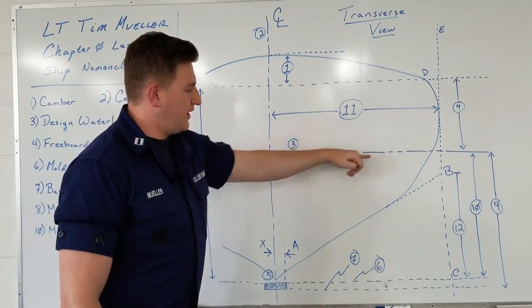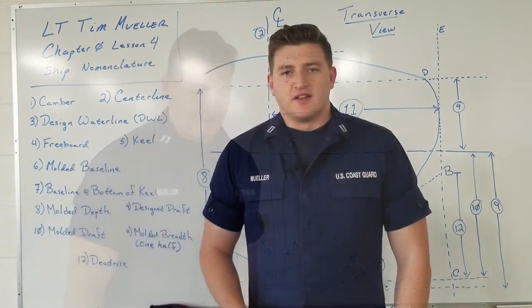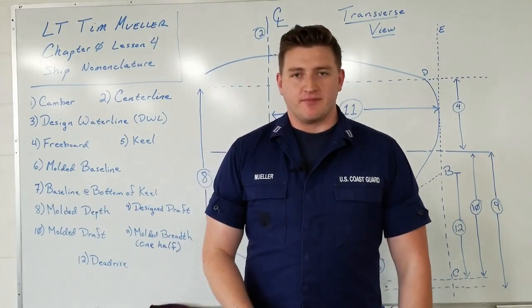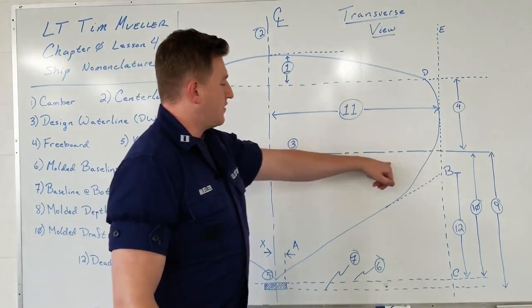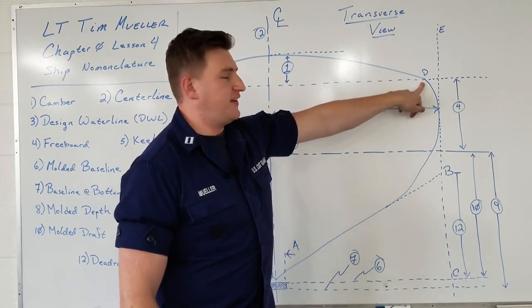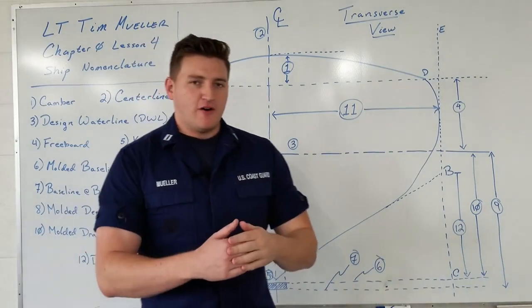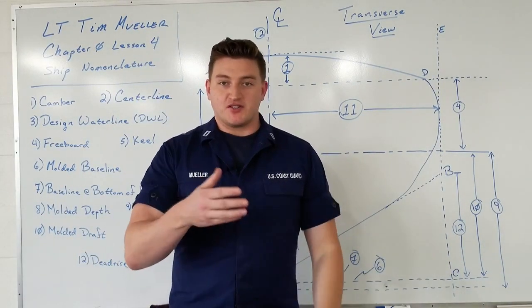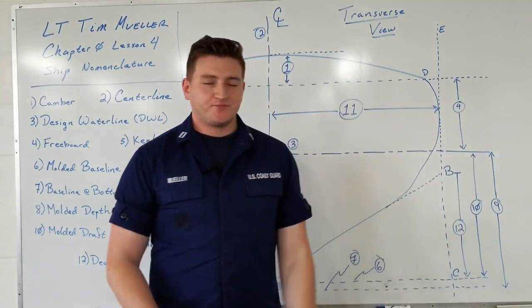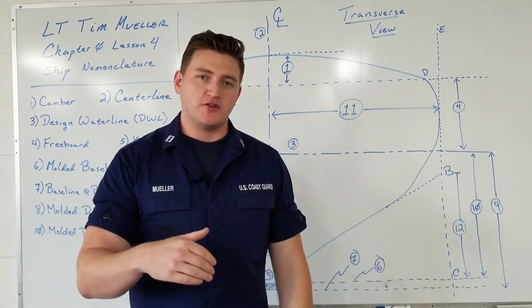Any plane parallel to the design water line is simply called a water line. Next on the list is freeboard, which goes hand in hand with reserve buoyancy. Freeboard is located between the design water line and the deck edge — point D. It tells us how far the deck can roll or be immersed before water actually comes up onto the deck edge.